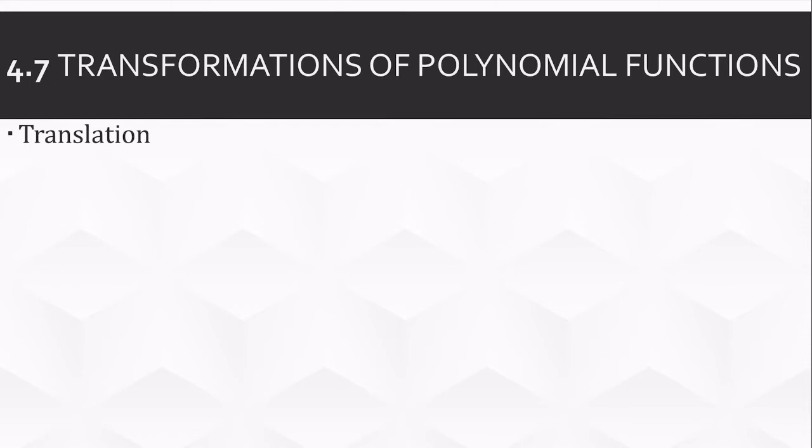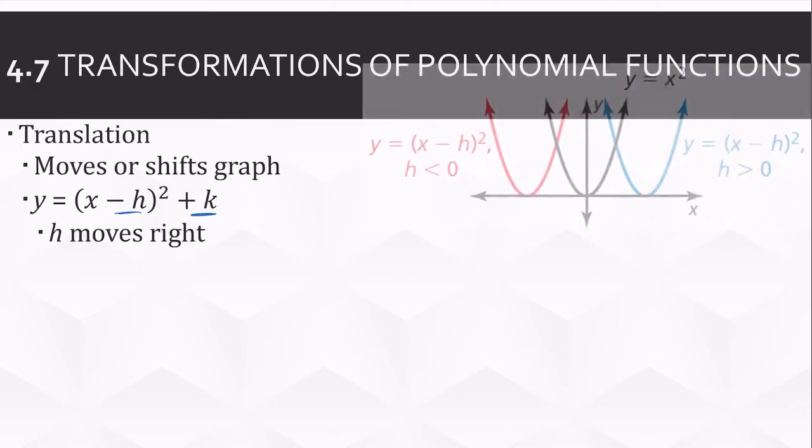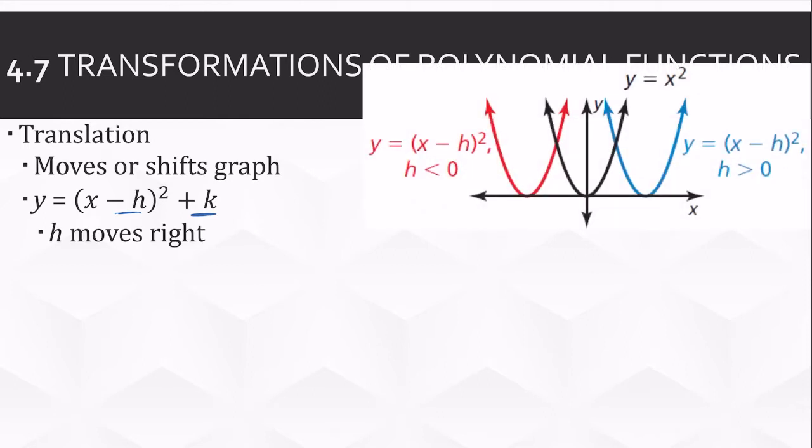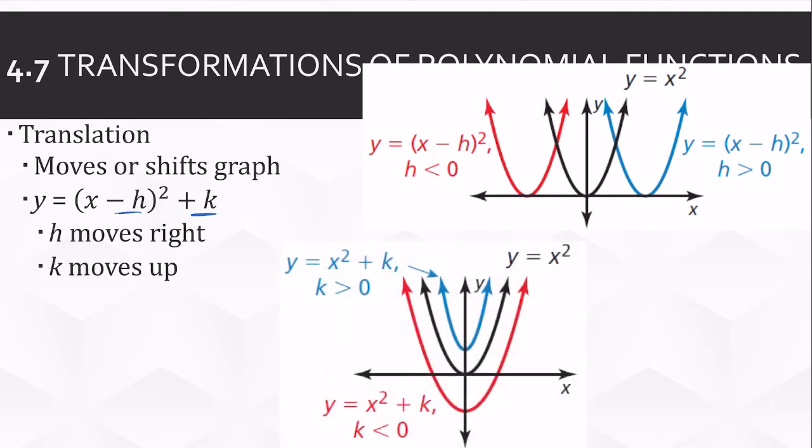Let's do a summary view because we've had transformations several times. A translation is our first type of transformation. It moves or shifts the graph. You know it by this H or the K. H moves the graph left or right. When it's x minus h, if h is positive it goes right. K moves it up and down. Remember, h is in the x direction, k is in the y direction. Anything in the x direction is in parentheses with the x. Anything in the y direction is outside of the parentheses.